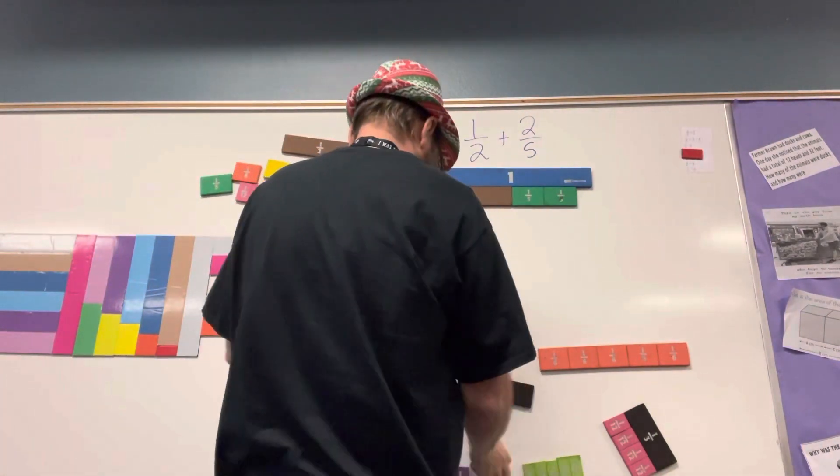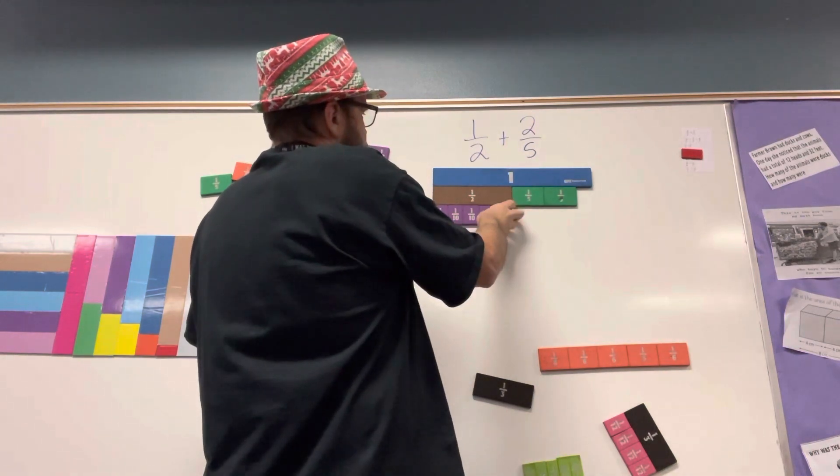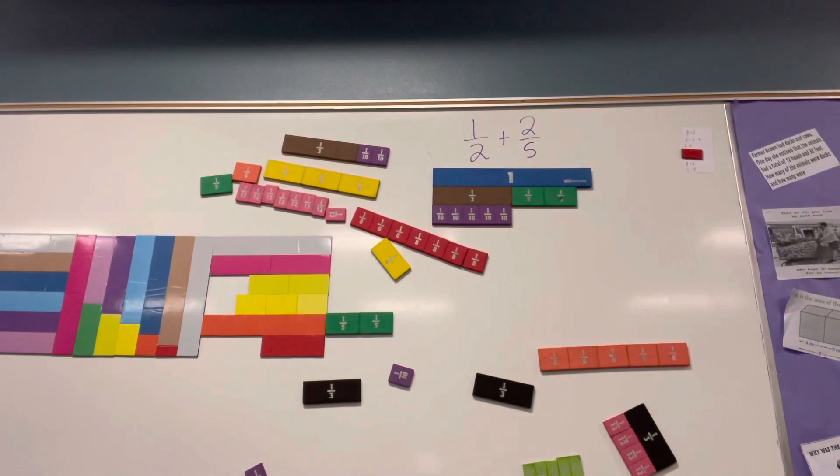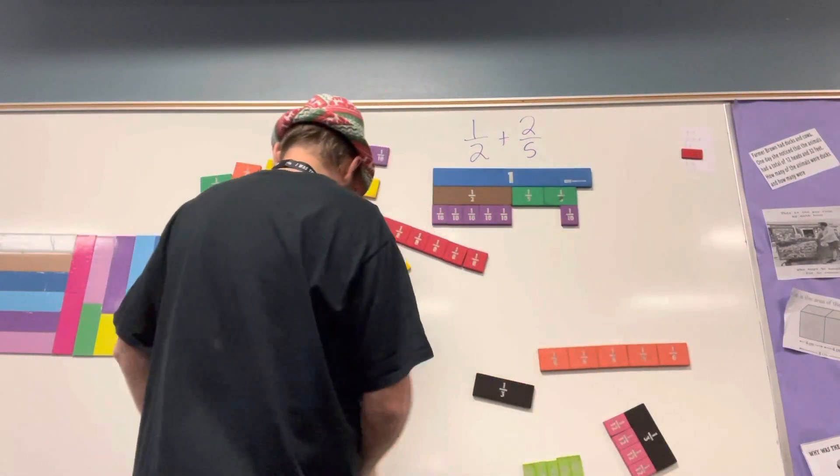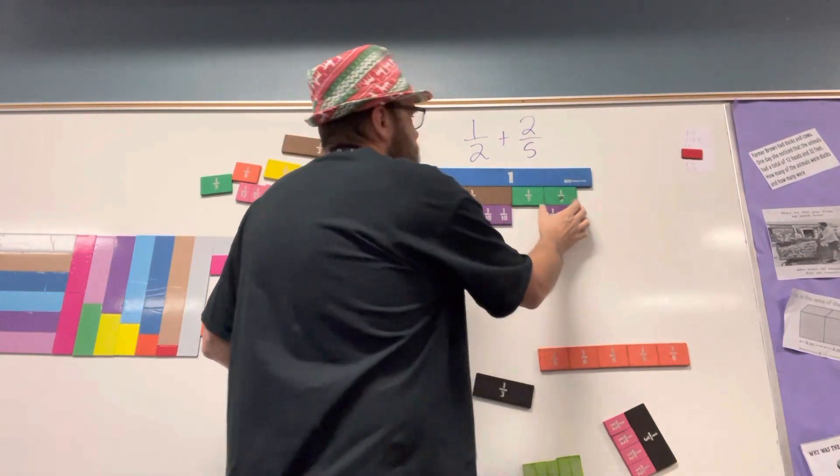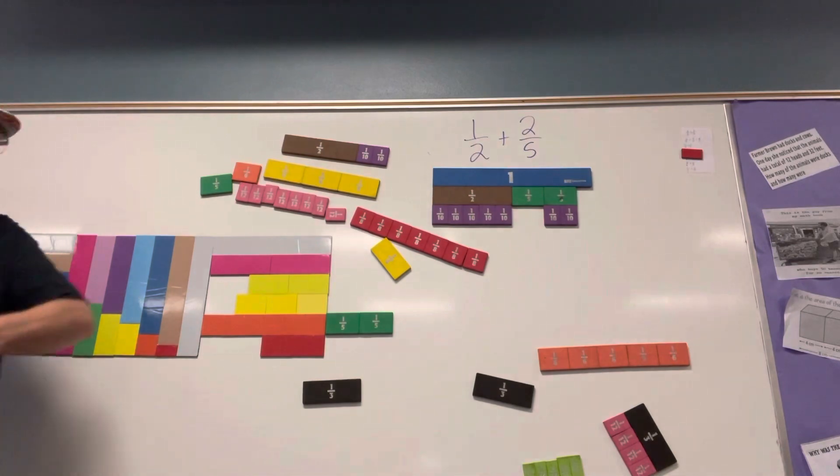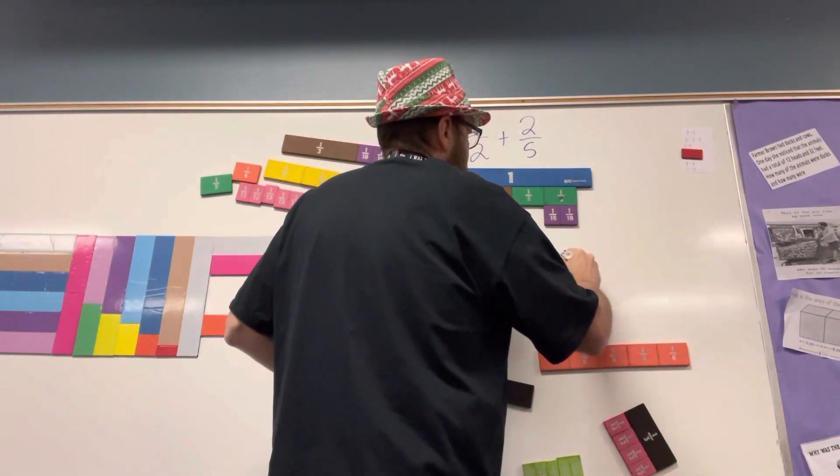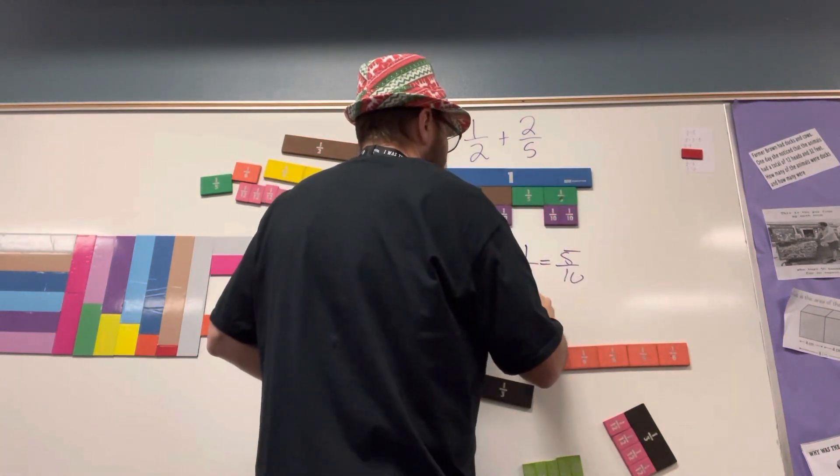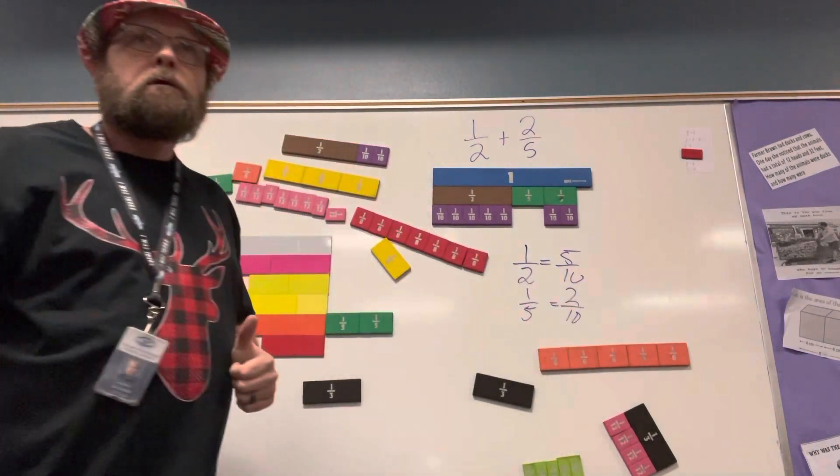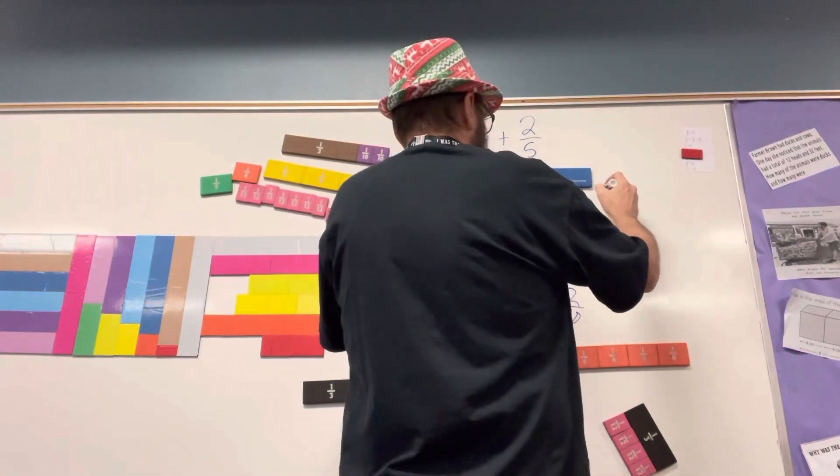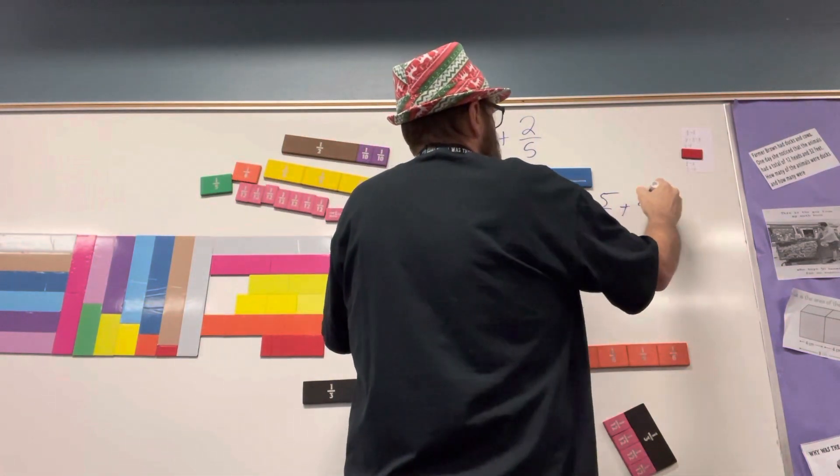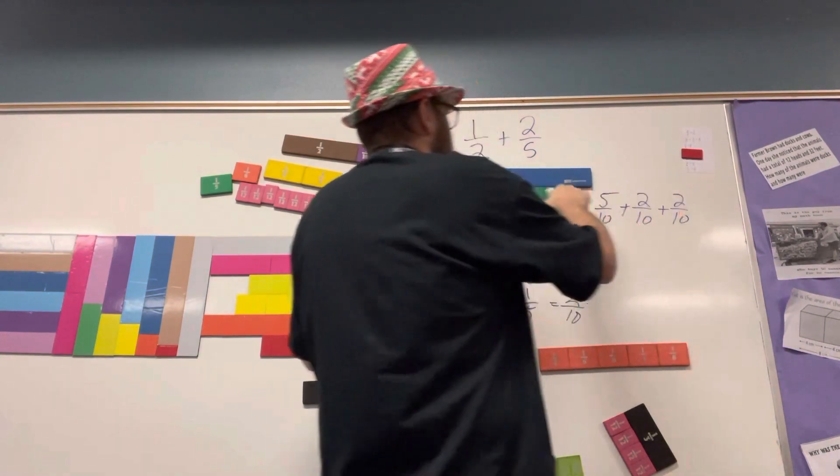How did you guess that it was tenths, Brooke? Because you could use halves and fifths. One fifth is equal to two tenths and one half is equal to five tenths. So what Brooke came up with is one half is five tenths, one fifth is two tenths. So what we have here is five tenths plus two tenths plus two tenths because I have two fifths.